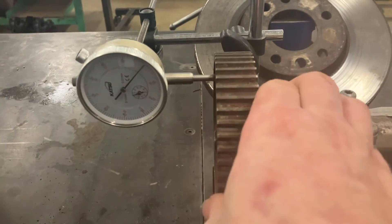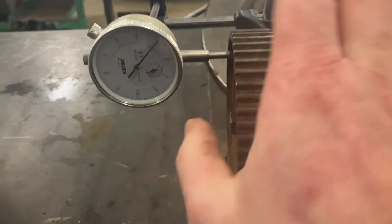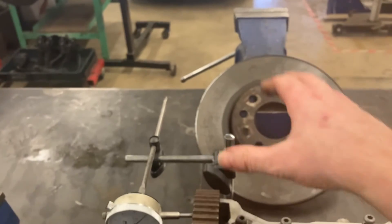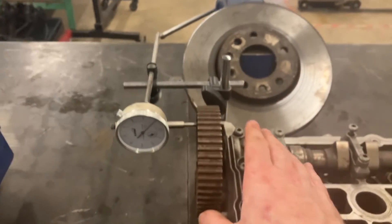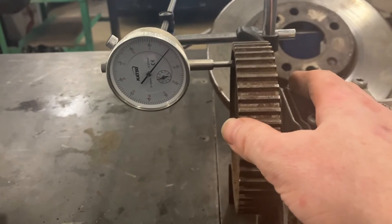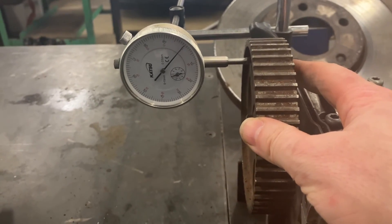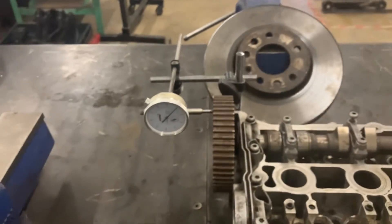Make sure your head's clamped to the bench, obviously. But yeah, so that would be end float or run out test. You can do that with camshafts, crankshafts, and obviously rotating components like a brake disc can be checked for warping. I hope that makes sense and I'll see you in the next one.